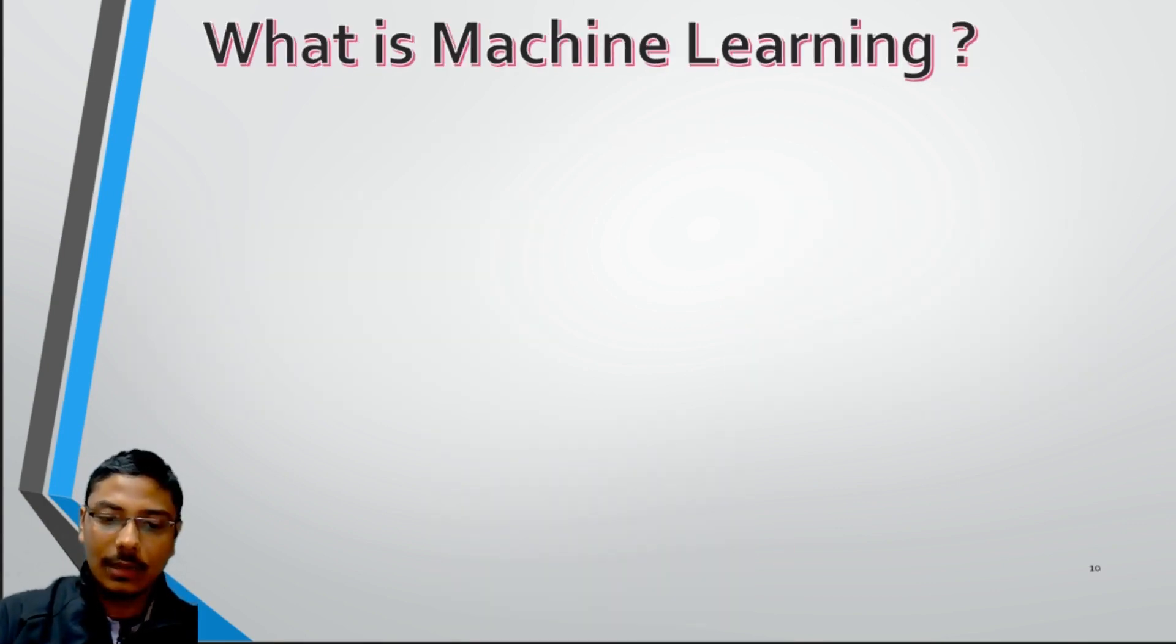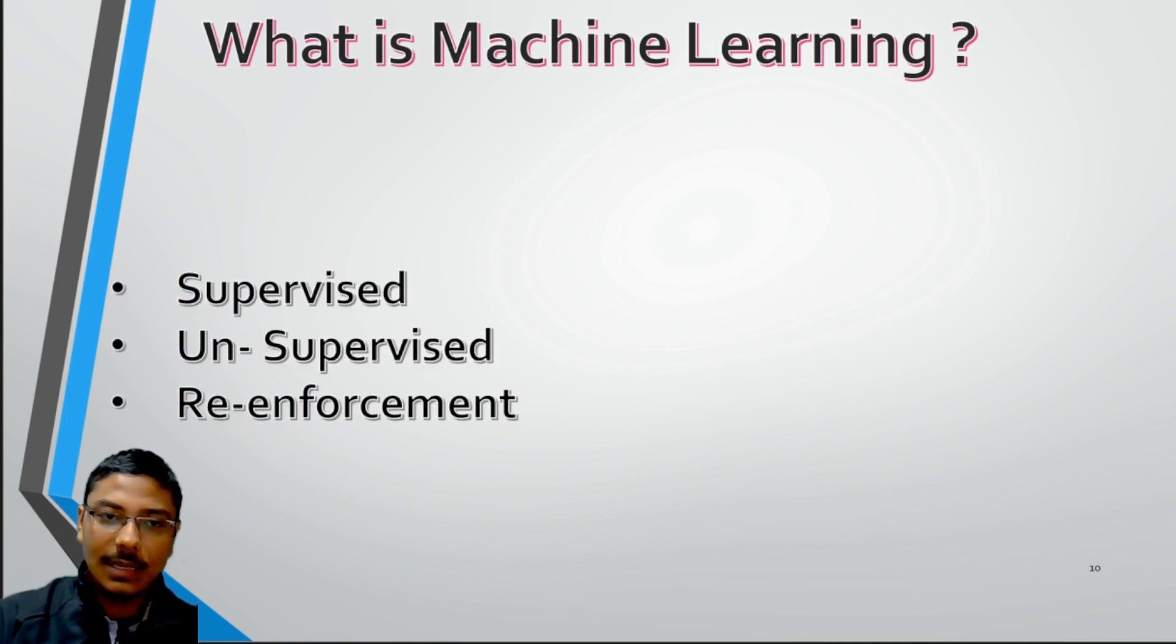What is machine learning? Machine learning is a branch of artificial intelligence and computer science, which focuses on the use of data and algorithms to imitate the way that humans learn and gradually improving its accuracy. These are the three types of machine learning: supervised, unsupervised, and reinforcement learning.